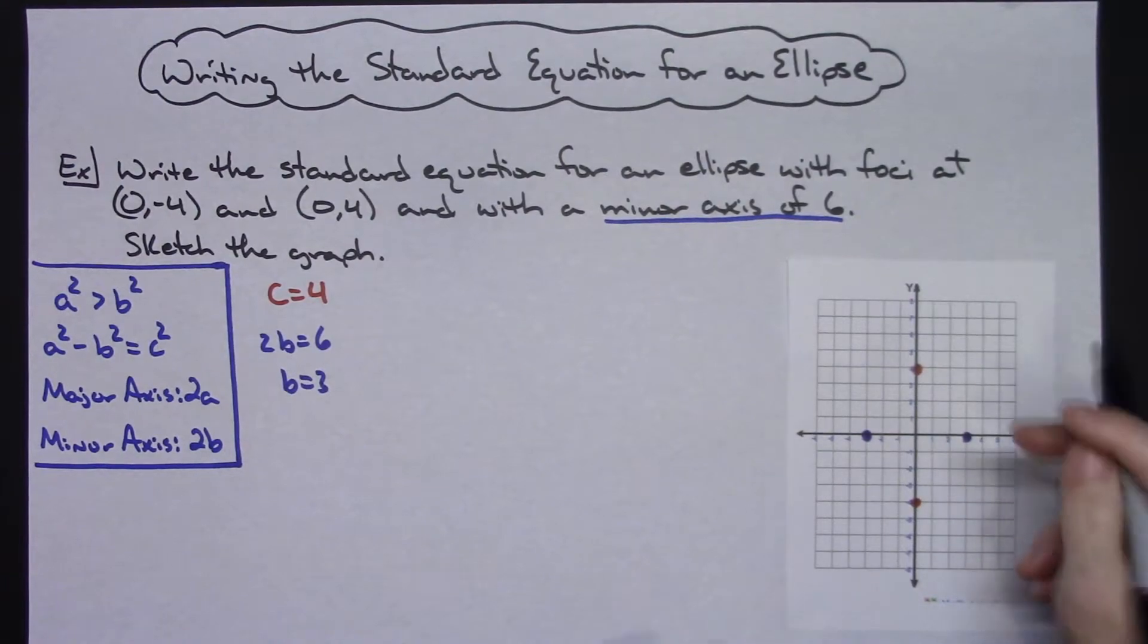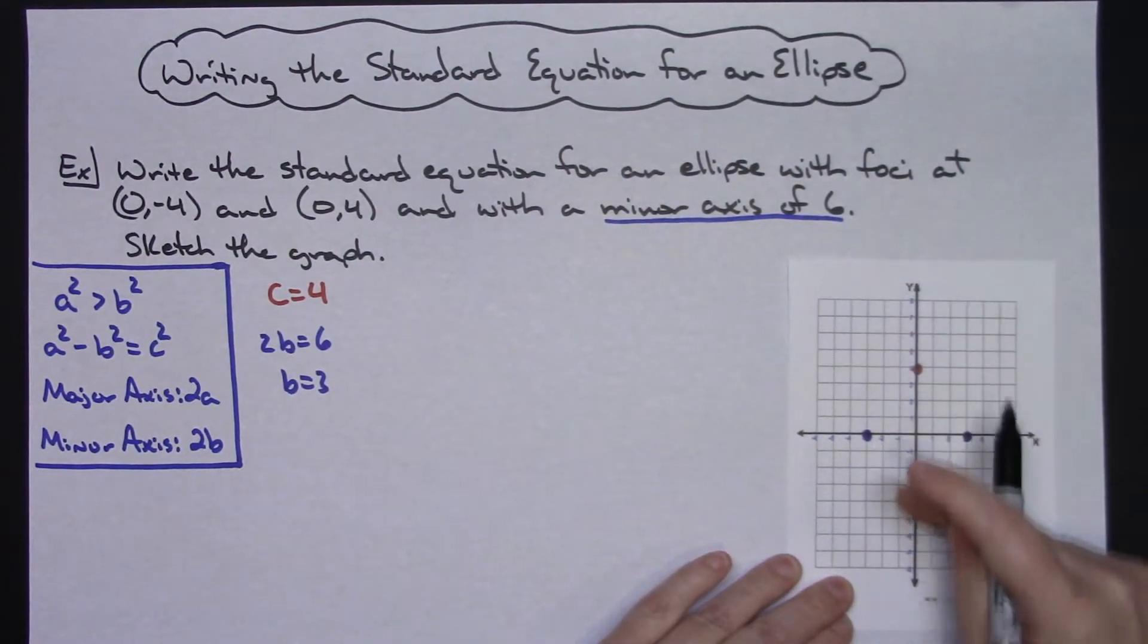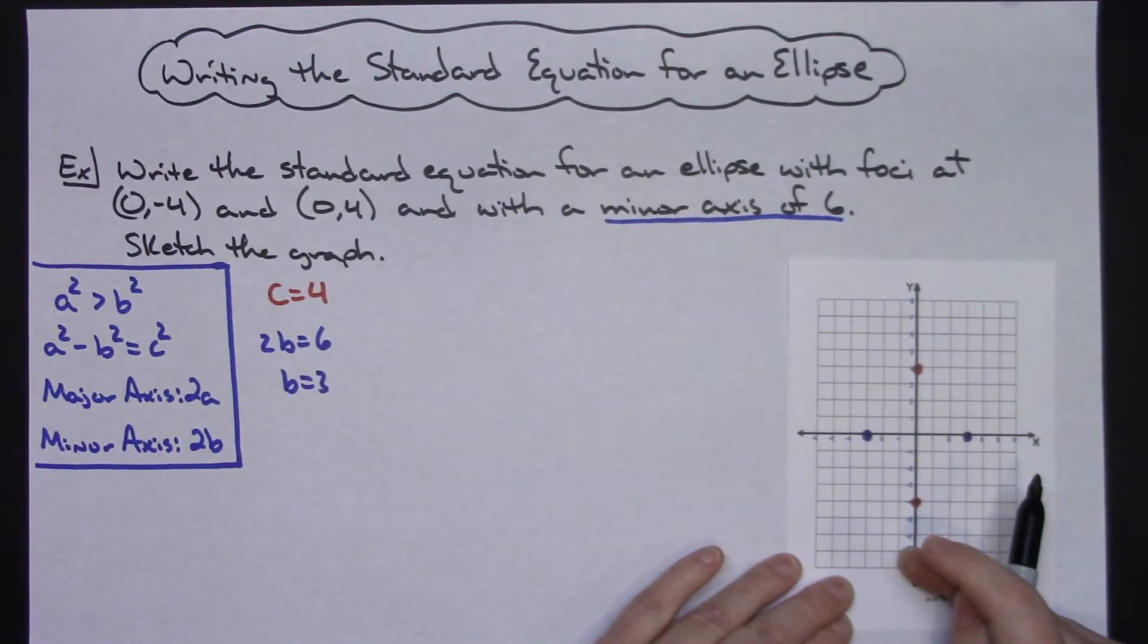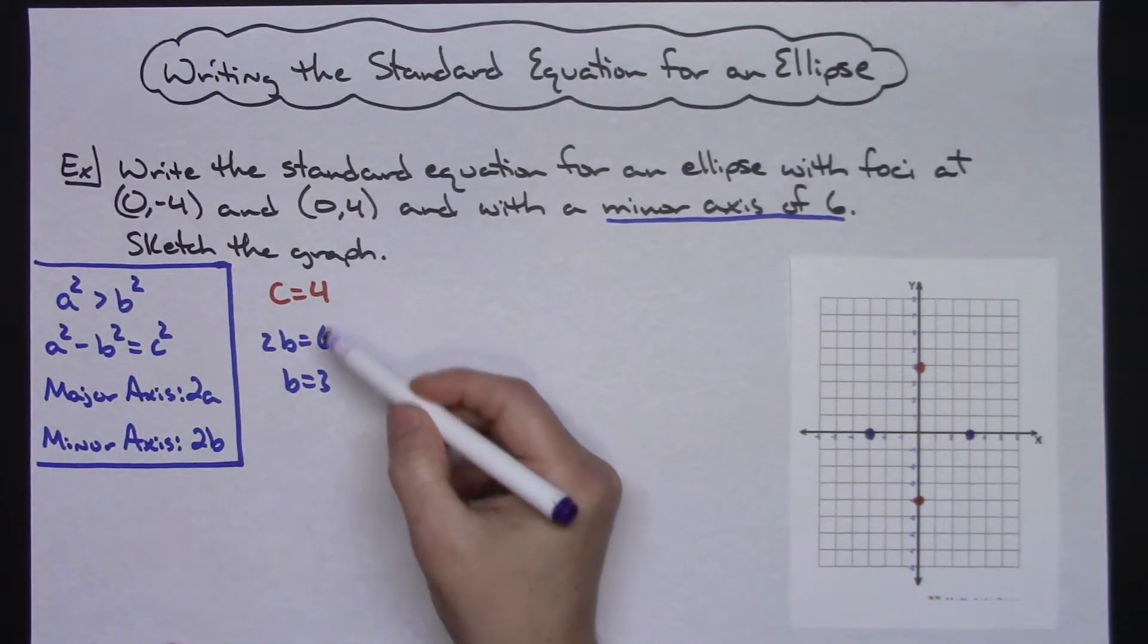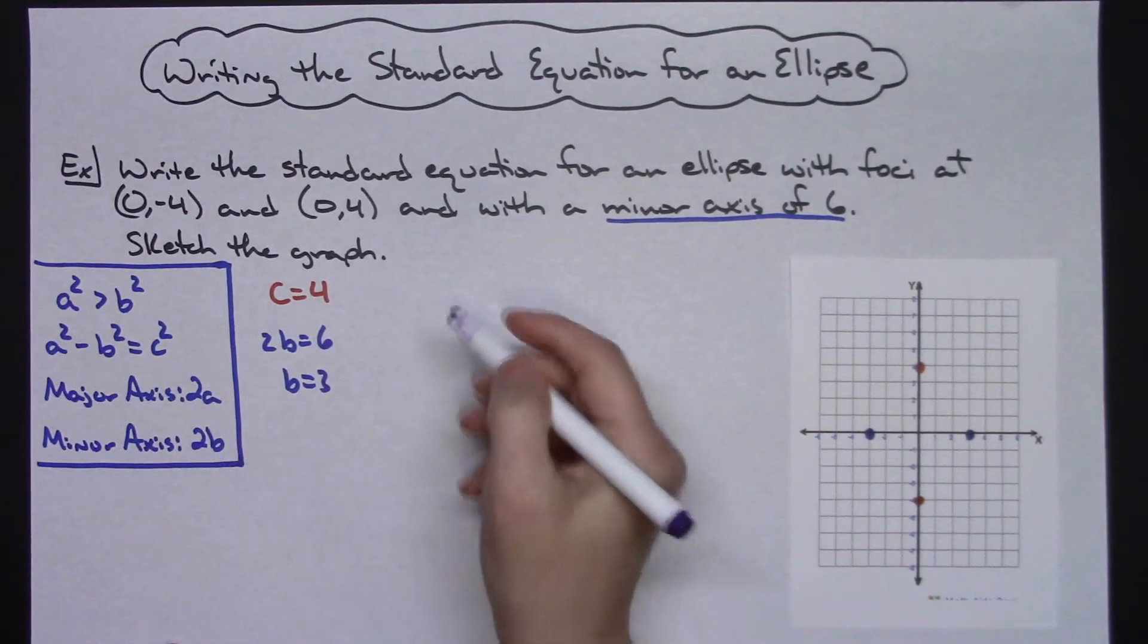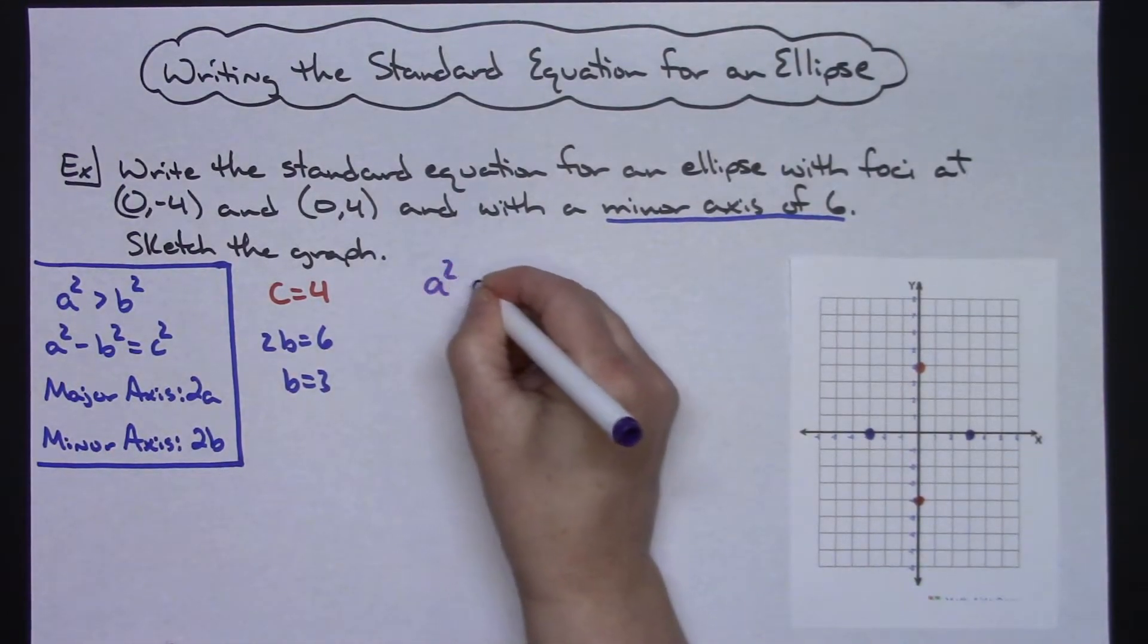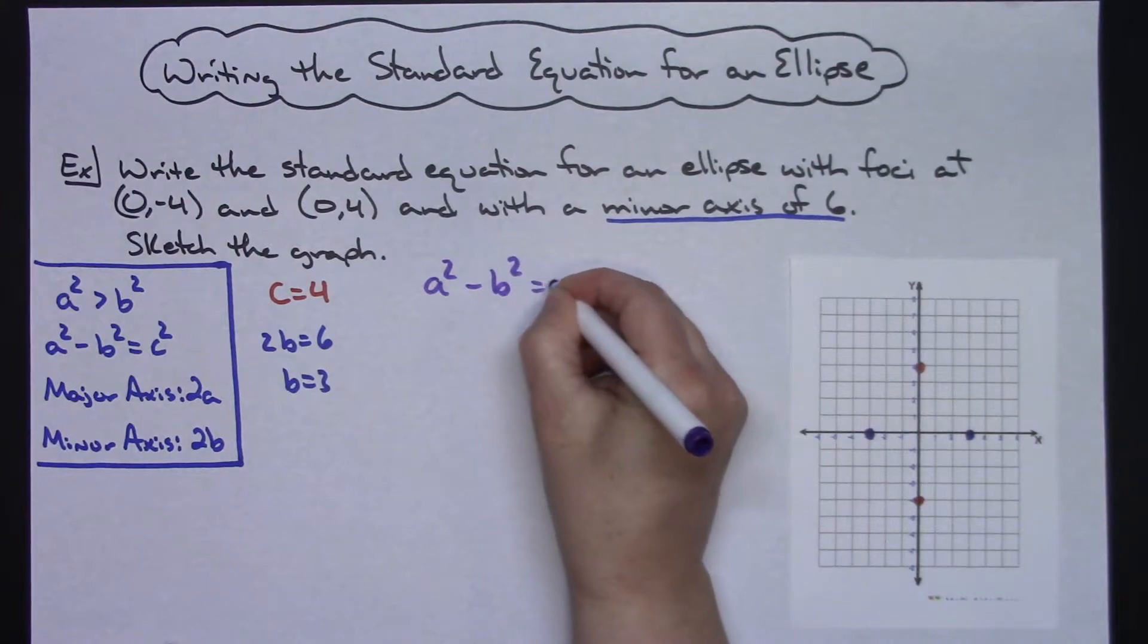Now I have to find how long the major axis is, so I need to find my A variable. Finding my A variable, I know C, I know B, now I'm going to use this formula right here.